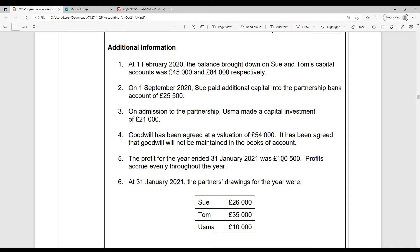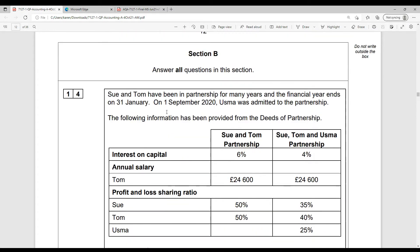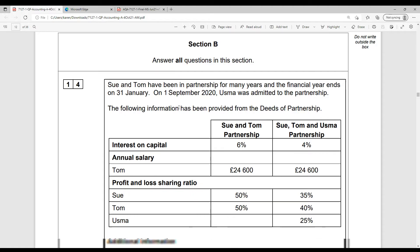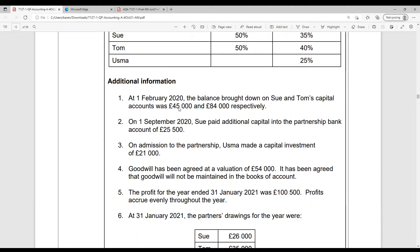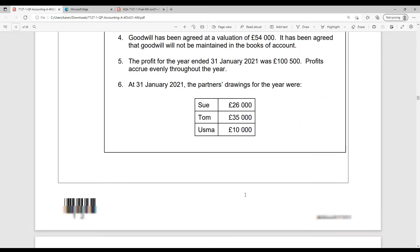Profit for the year was £100,500, and luckily that accrues evenly throughout the year. So we just need to split that between the seven months up until Usma joined, because she joined on the 1st of September. So if we count from the 1st of February through to the 31st of August, that's a seven-month period. And then September, October, November, December, January, a five-month period from when Usma joined to the year end of the 31st of January. And then we've got drawings, £26,000, £35,000, and £10,000, respectively.